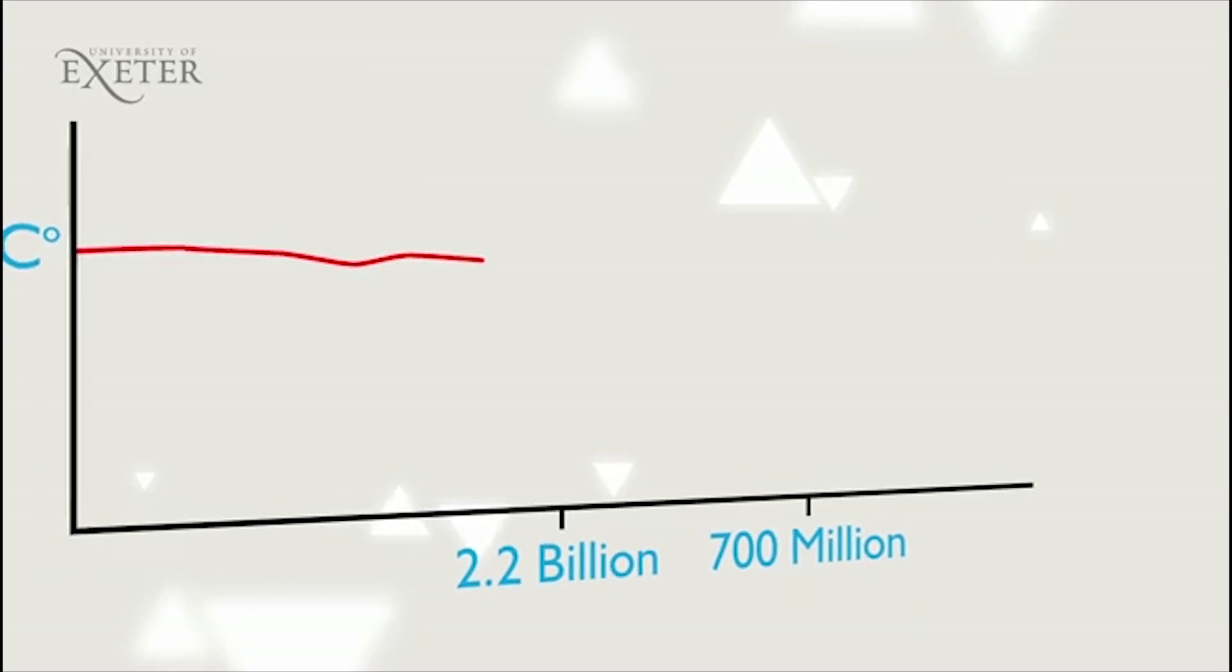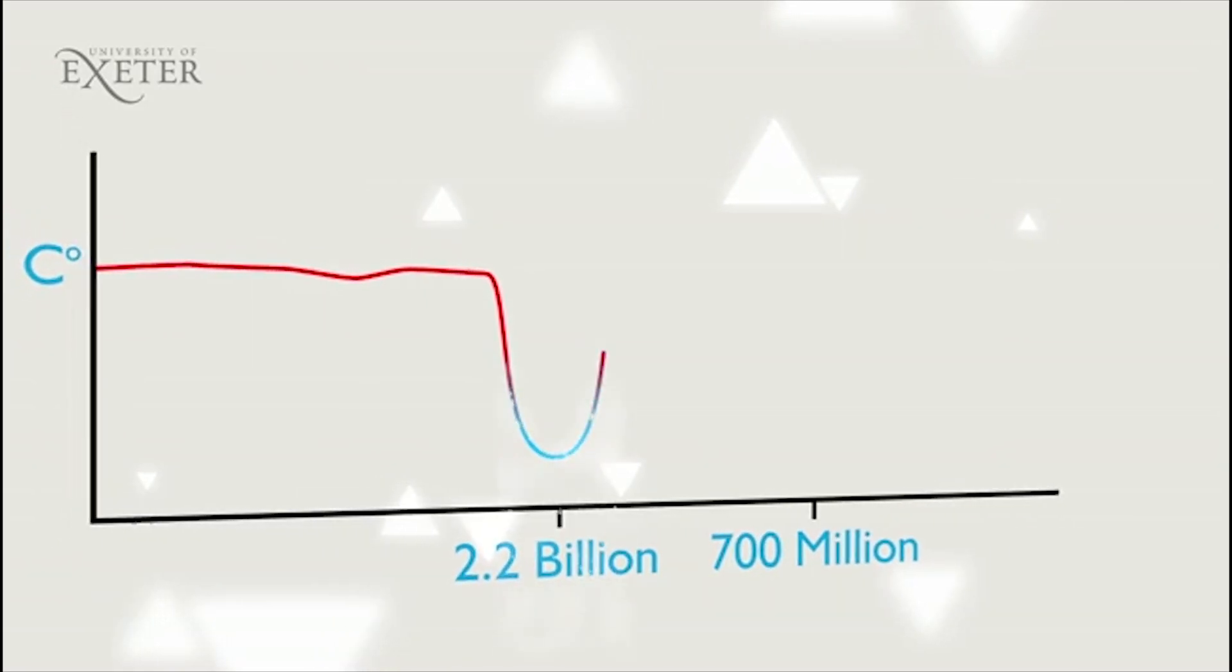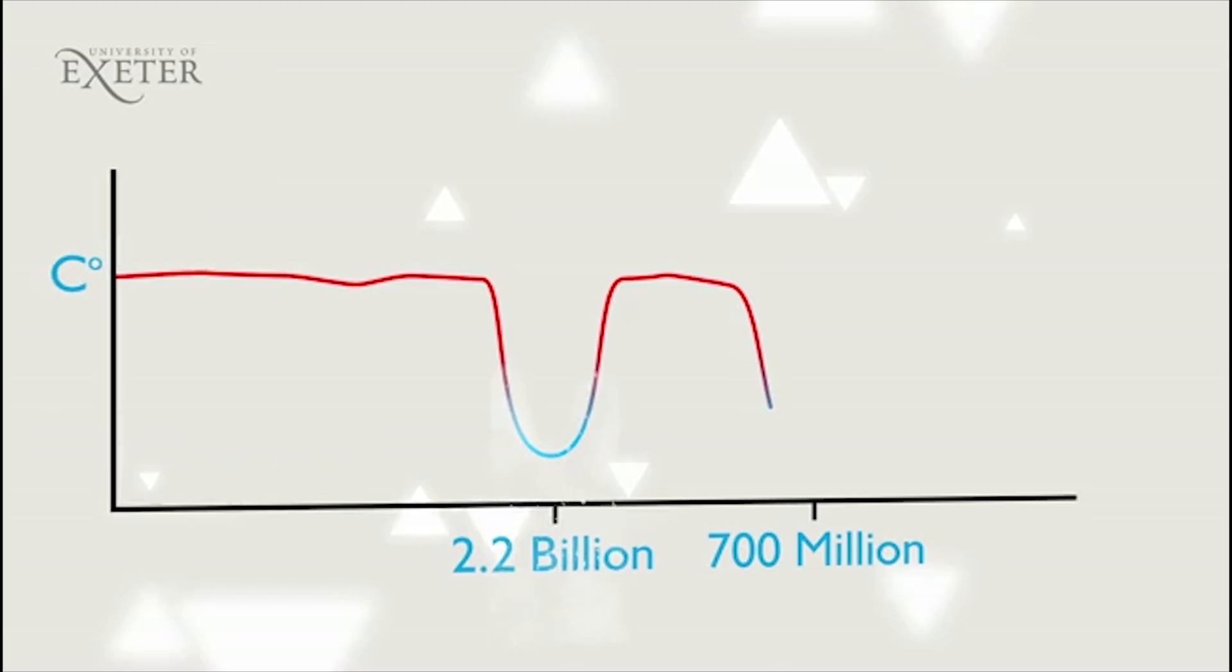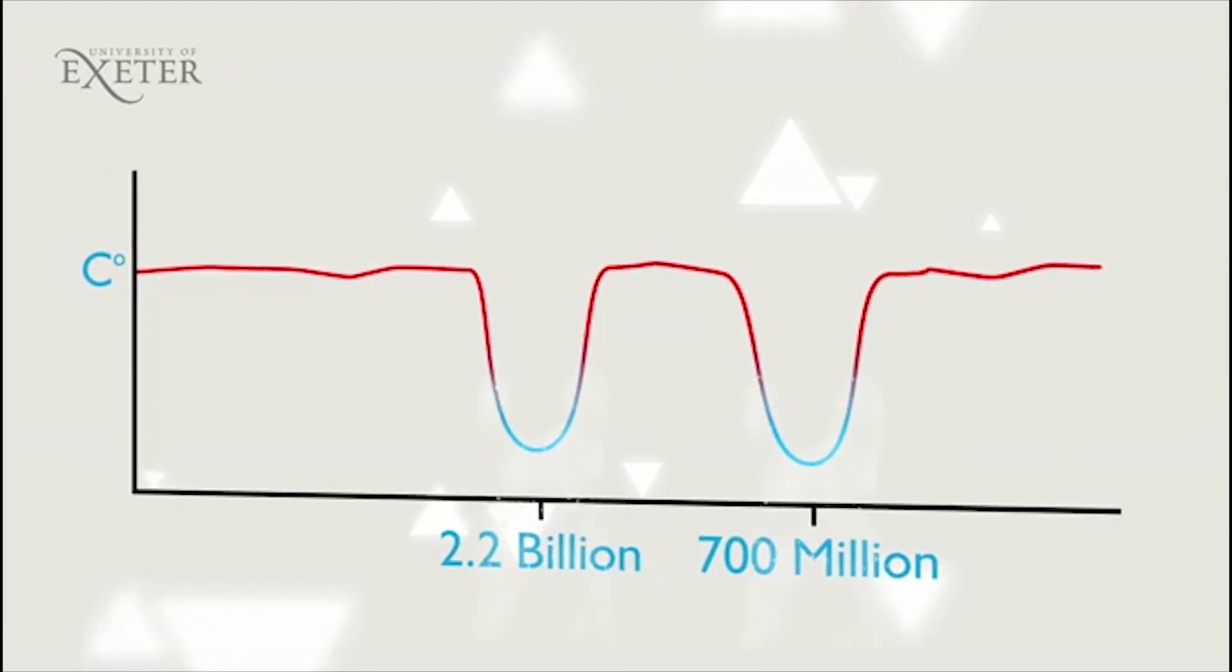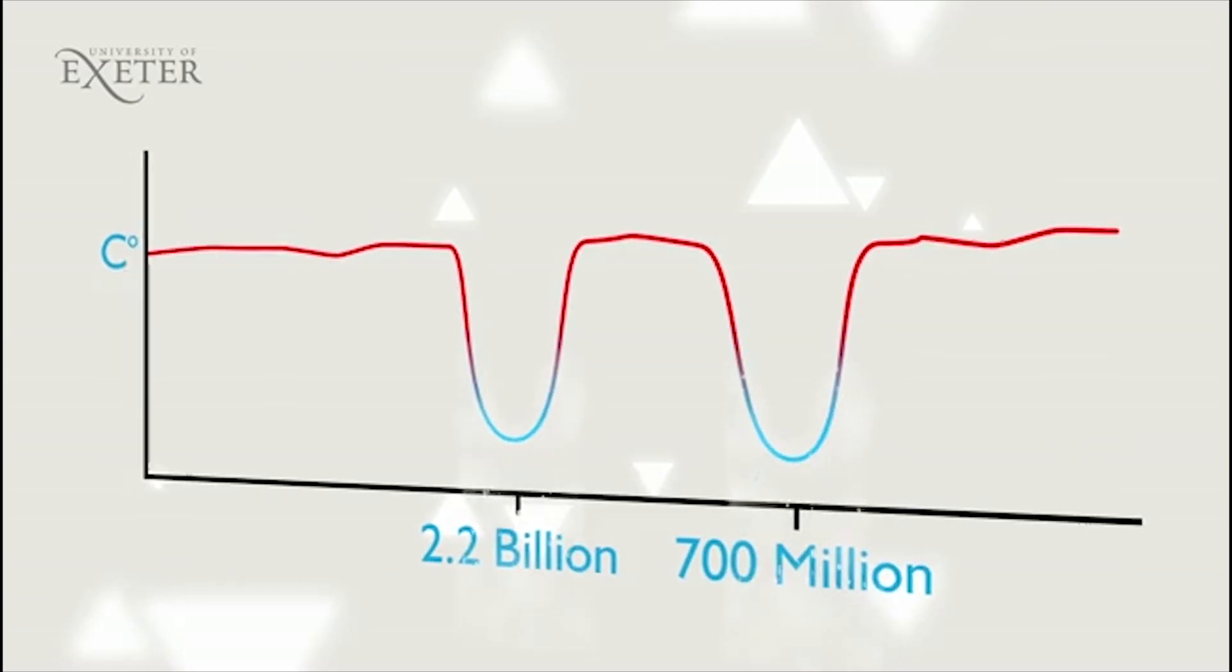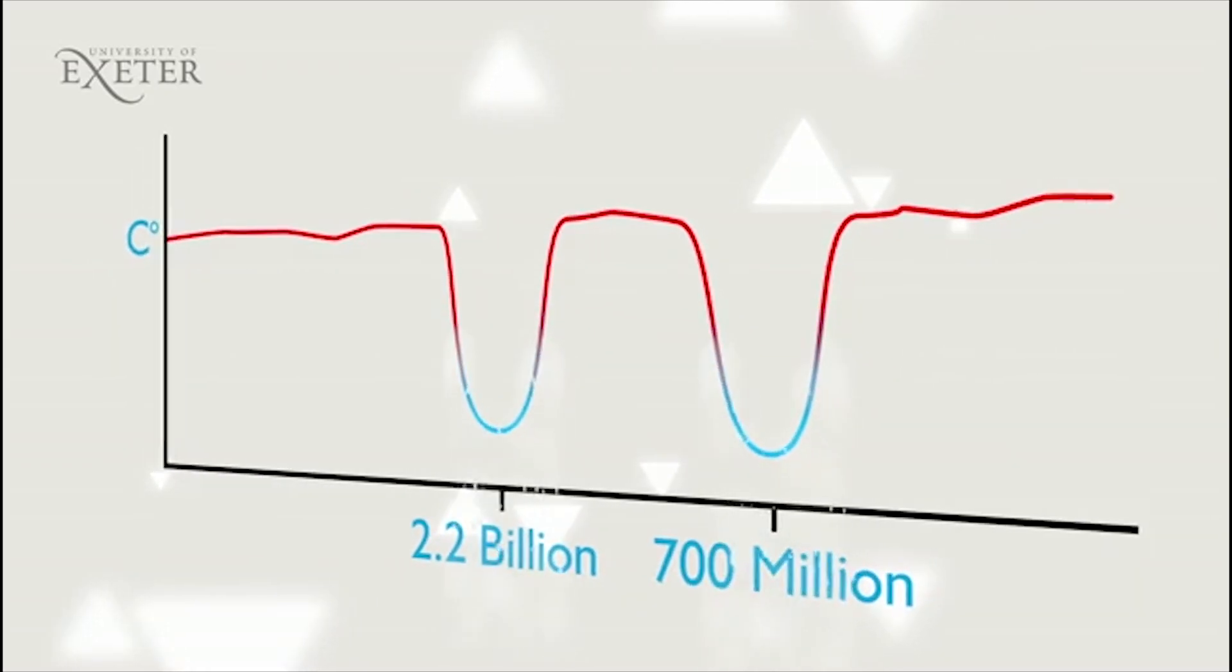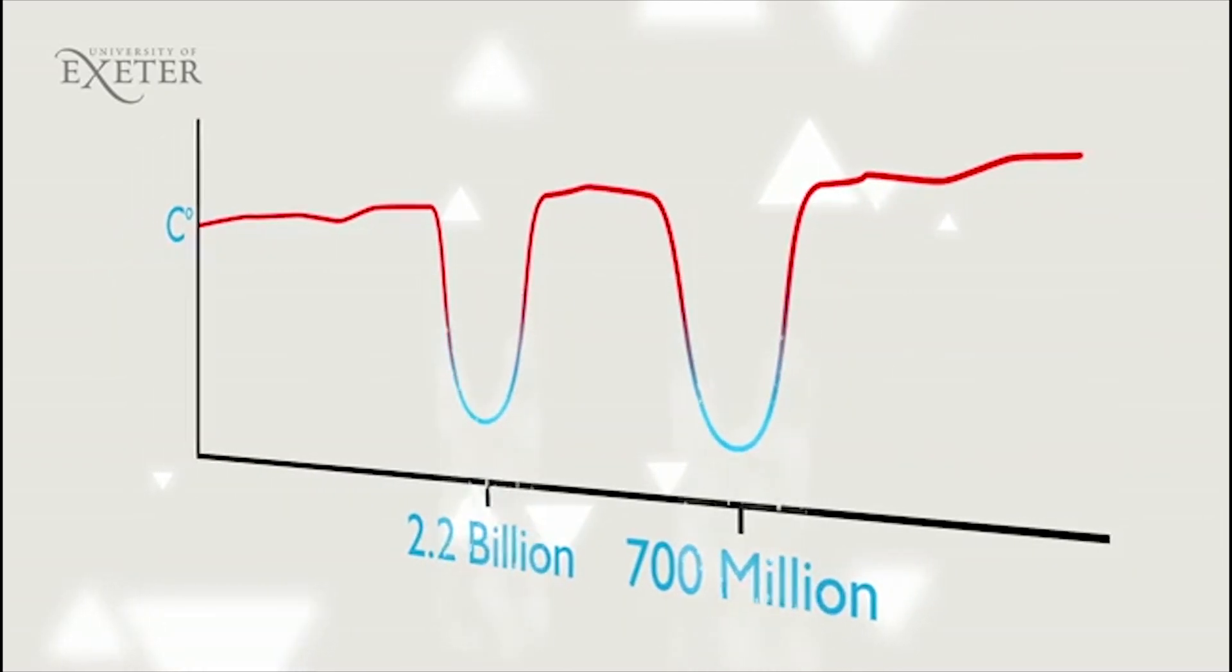2.2 billion and again 700 million years ago were two periods in Earth history that were extremely unusual. Our planet became a giant snowball. How did Snowball Earth come about and why, ultimately, did it melt?